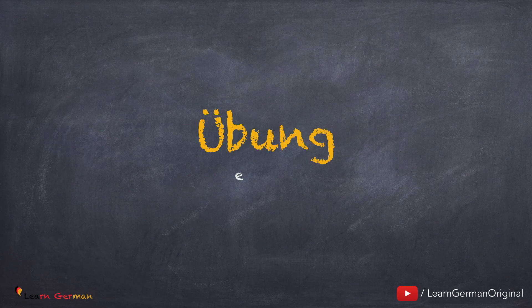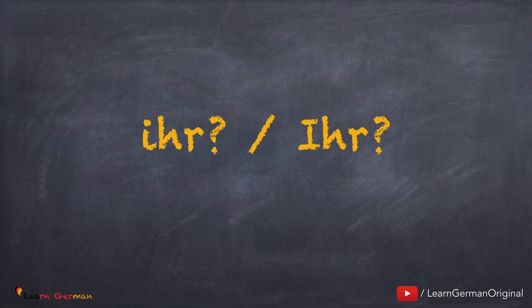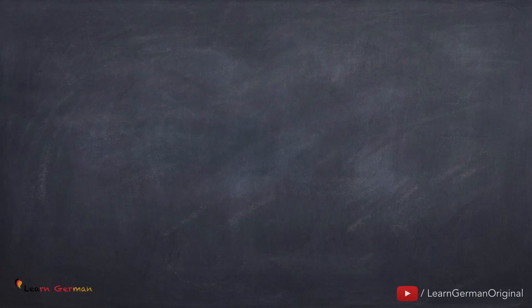Now let's do an exercise to see how much you have learned. You have to fill in the blank with Ihr groß oder ihr klein. Ihr groß is used only as a possessive pronoun for formal situations. Ihr klein is used as a personal pronoun, as a possessive pronoun, and as a Dativ personal pronoun. You can revise this by watching the video once again before you begin with the exercise.